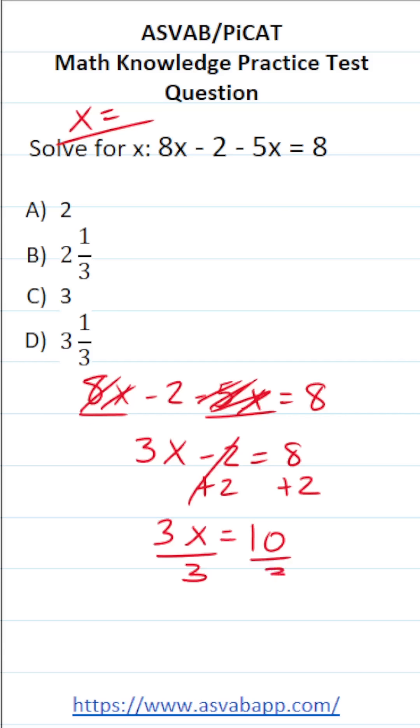we're going to divide both sides of this equation by 3. This says x equals 10 over 3.